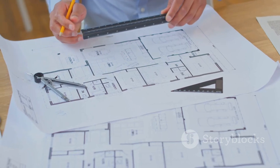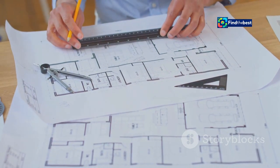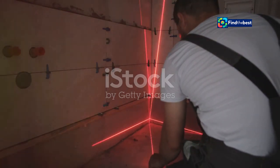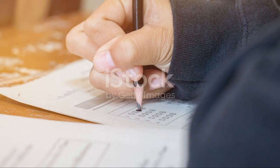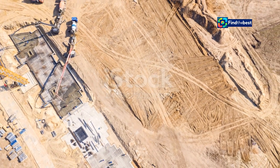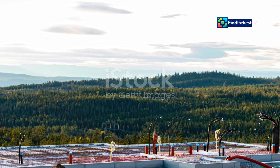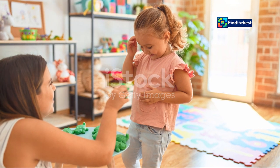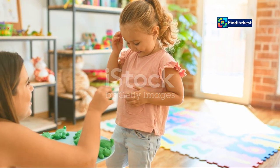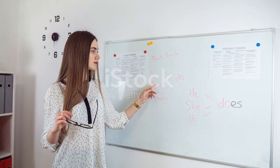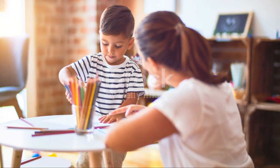Think of it like building a house — you need a blueprint to ensure everything fits together perfectly. You wouldn't start building walls without a solid foundation. The same principle applies to writing: a clear structure is essential. A strong structure is the foundation for a clear, impactful piece of writing. It all starts with understanding the key components of an essay — the introduction, body paragraphs, and conclusion. Each part has a specific role to play.